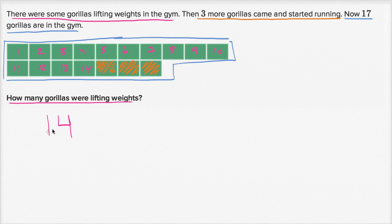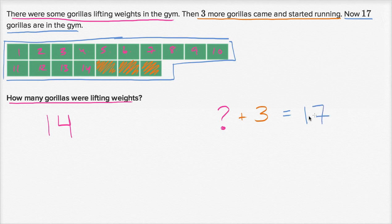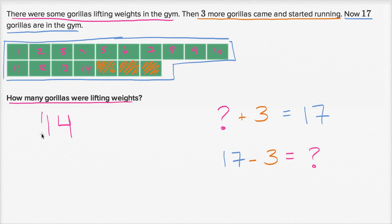There are other ways you could have done this. You could say there were some number of gorillas lifting weights in the gym, then three more gorillas walk in, and now there are going to be 17 gorillas. So you could say something plus three is 17. Or you could say 17 minus three — minus the three that walked in — and that's going to give you how many you originally had. Either way you think about it, you get to 14.